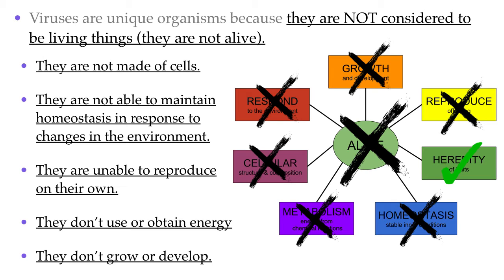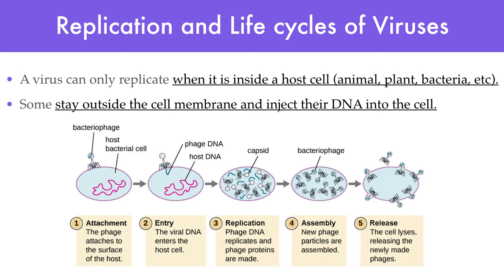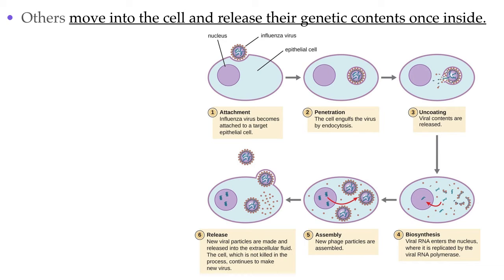In conclusion, viruses are not living things because they don't meet all seven criteria to be considered alive. But viruses do have the ability to replicate, so let's take a look at how they do that. A virus can only replicate when it is inside a host cell. There are viruses that stay outside the host cell and simply inject their DNA or RNA into it, and there are those that enter the cell and release their genetic material once inside. Either way, the aim of the virus is to get their genetic material inside a living cell.